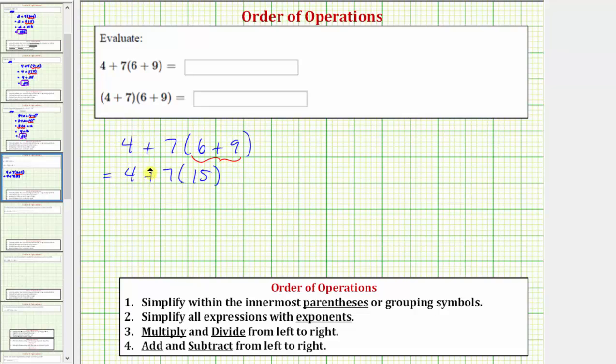Now notice how we have addition here and multiplication here. We can skip step two of the order of operations because we don't have any exponents. So looking at step three, we multiply and divide from left to right, and then step four, we add and subtract from left to right. So in simplifying an expression, we're always going to multiply and divide from left to right before we add and subtract from left to right.